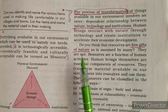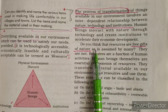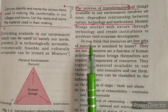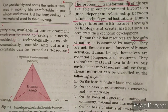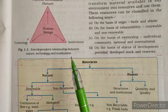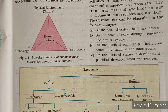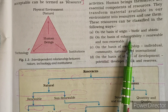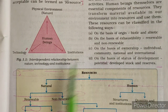Dear students, we are well aware that these resources are a free gift of nature, but it is not that simple. We require technology, we require institutions, and we require knowledge about nature — only then can we convert raw material into resources. Now these resources are categorized into various types: on the basis of origin, exhaustibility, ownership, and status of development.